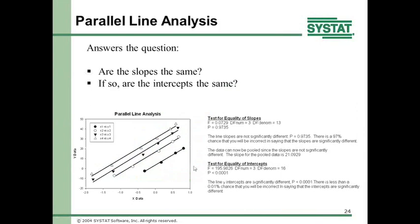Parallel line analysis answers: are the slopes the same? If so, are the intercepts the same? Here the slopes are obviously the same — the description says the line slopes are not significantly different, with a p-value of 0.9, meaning there's a 97% chance you'd be wrong to say slopes differ. Data can now be pooled since slopes are not significantly different, with a pooled slope estimate of 21.09. Clearly the intercepts are different, so that's the parallel line analysis result.